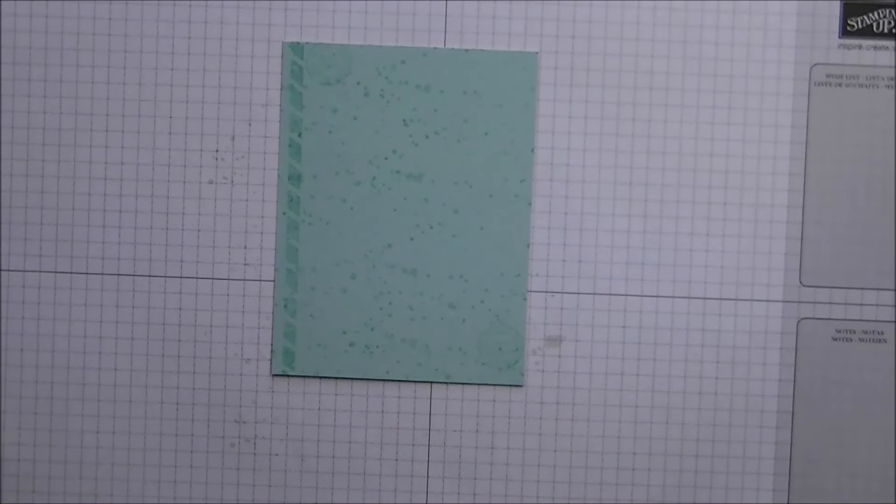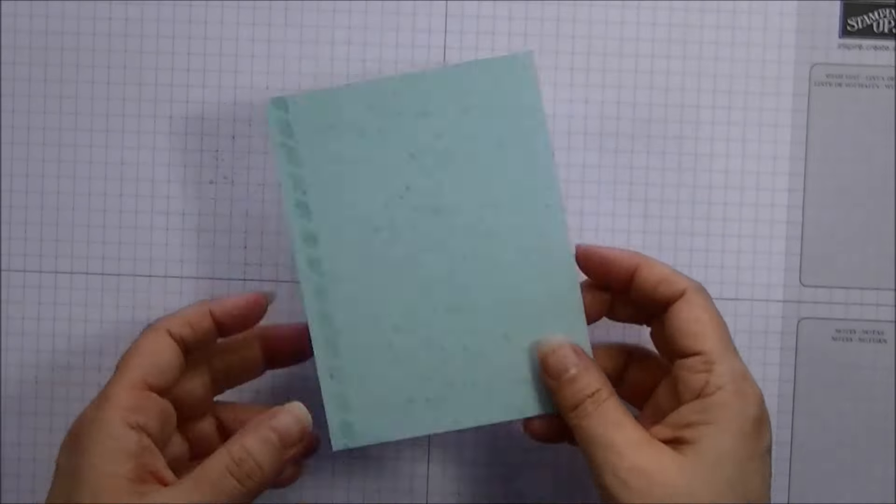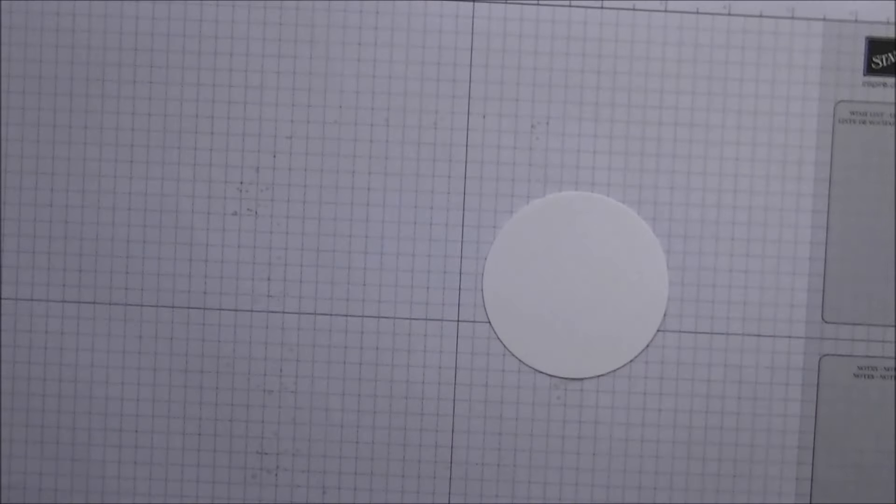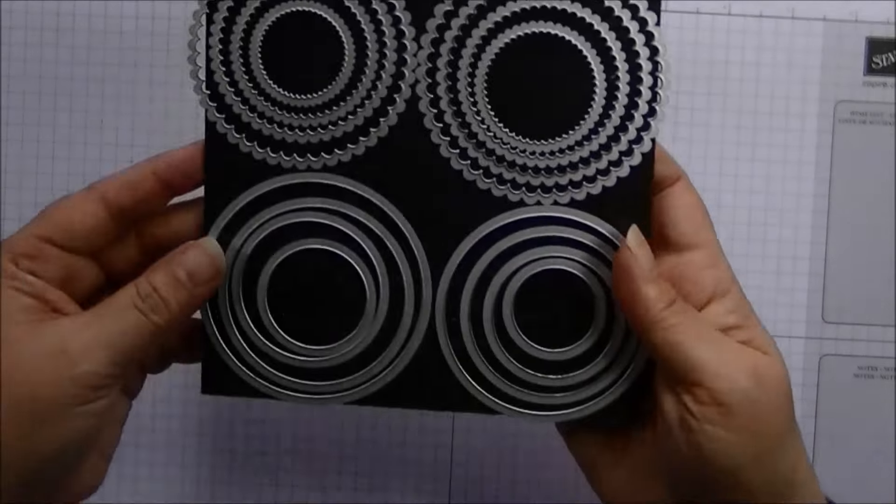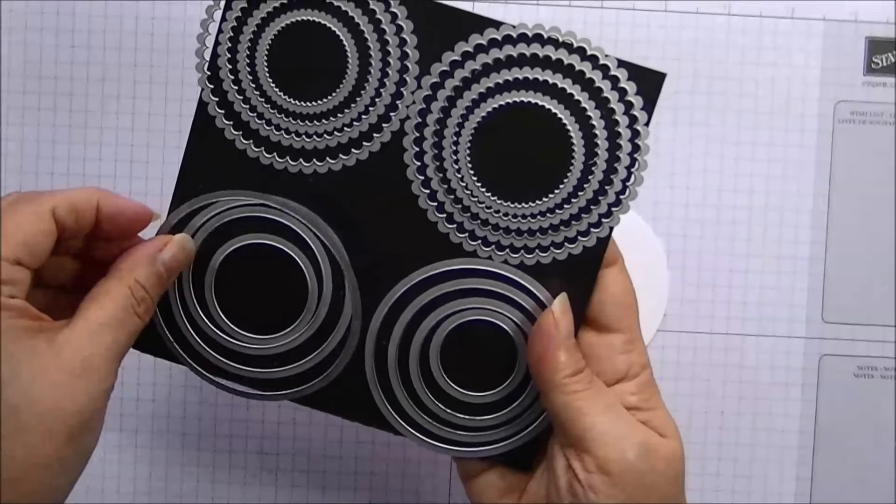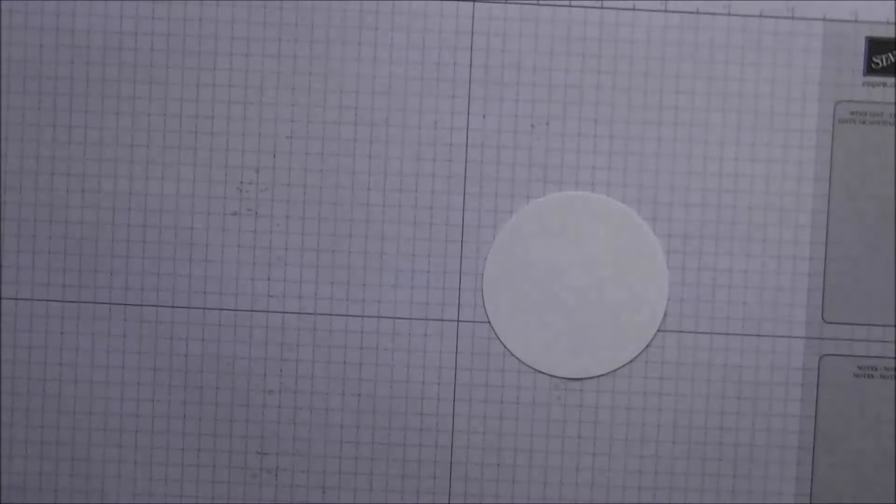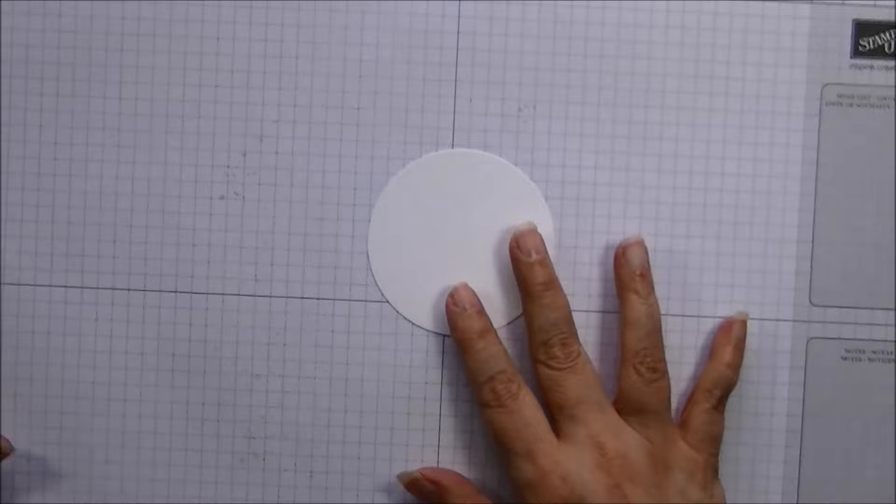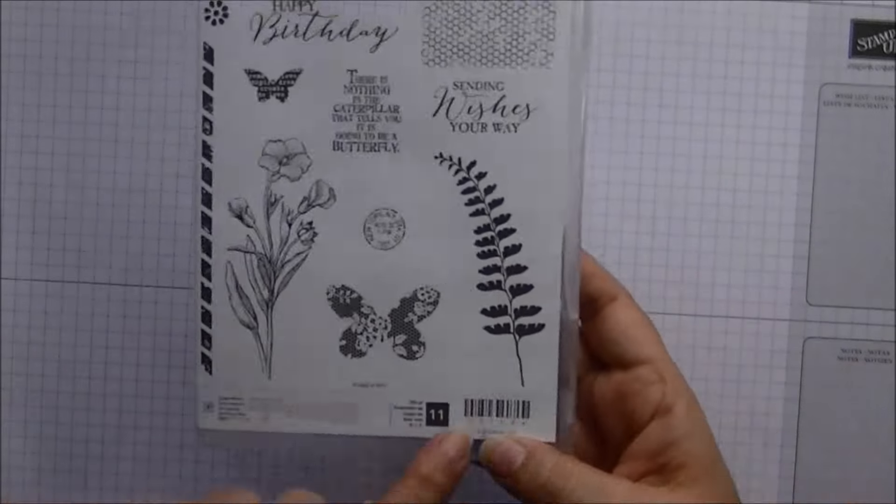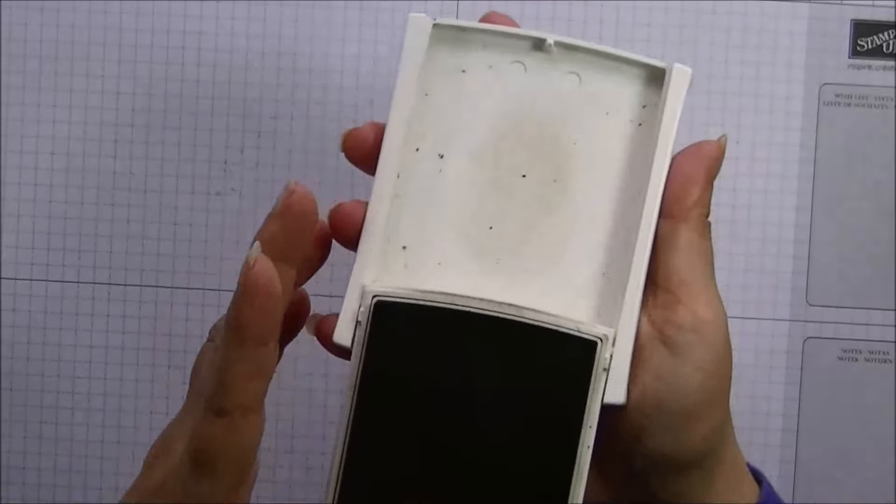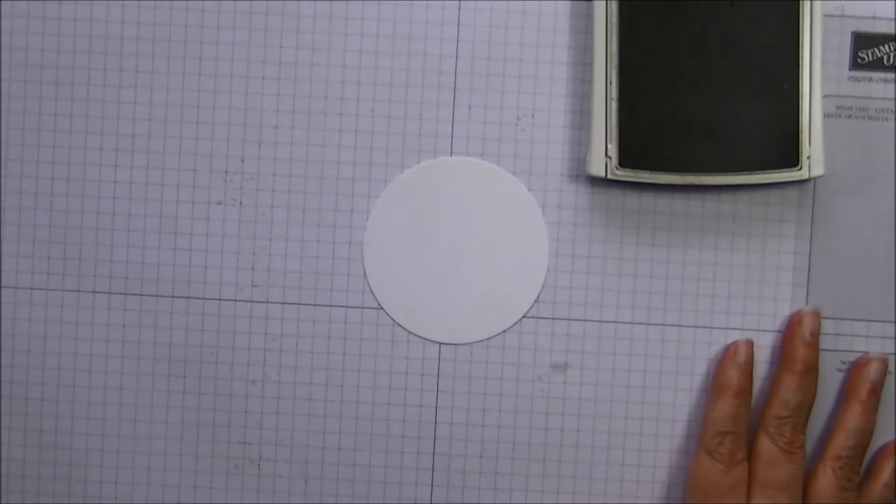So the next thing that we want to grab, I'm going to set this aside, is the circle that we cut using the layering circles dies. And I use the biggest straight edge circle for my circle today. So now I have my circle. I am going to grab my fern. And I am going to use the crumb cake and the Pool Party.